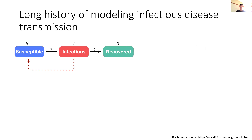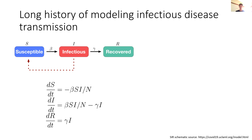There's a very long history of people thinking about disease transmission. One of the most popular types of mathematical models are compartmental models. In a compartmental model we have a population where each individual belongs to a different compartment or class. A very simple example is the SIR model with three compartments: susceptible, infectious, and recovered. People can move between these categories with different rates depending on how many people are in each category.